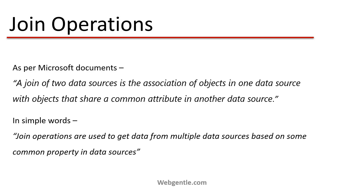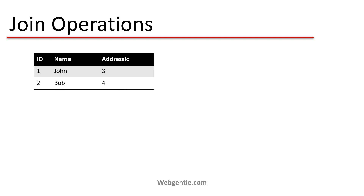If you need to fetch data from all these tables — whether two tables or three tables — you have to work with a common property, and in this scenario that common property is the employee ID. So join operations are used to get data from multiple data sources based on some common property in the data sources.